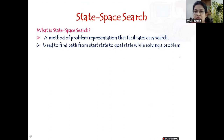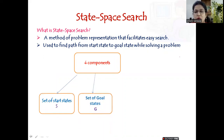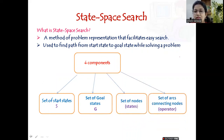In the same way, here we start with the start state and try to reach the goal state. In any state space search, there are four components: the set of start states (indicated with capital S), the set of goal states (indicated with capital G) — there can be more than one goal state — the set of nodes (representing various states), and the set of arcs connecting the nodes, also called operators.